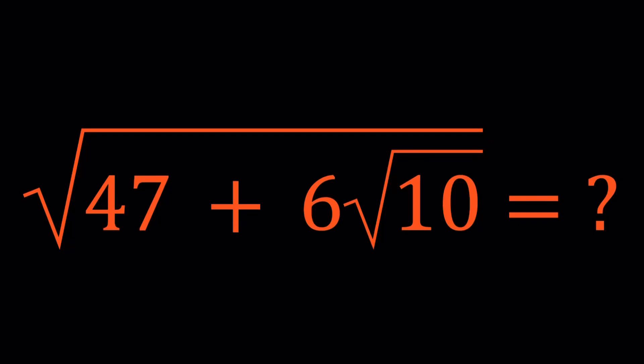Hello everyone, in this video we're going to be simplifying a radical expression. We have the square root of 47 plus 6 times the square root of 10, and we're going to simplify this expression, writing it as a sum of 2 or more radicals.